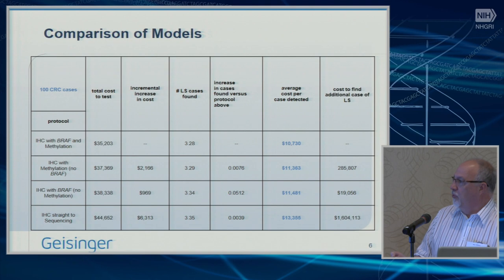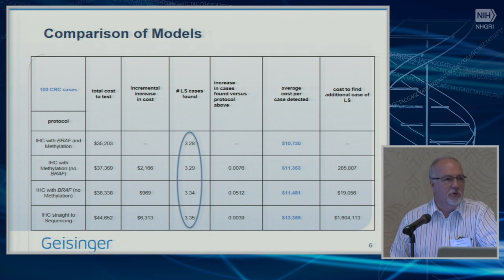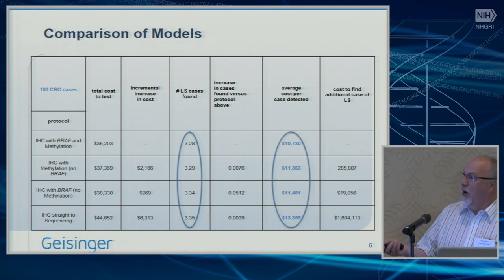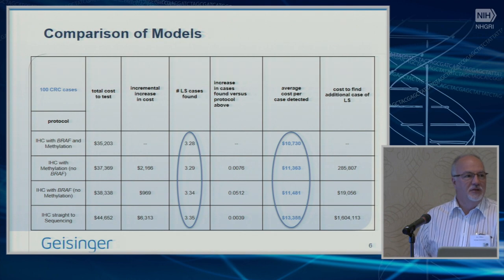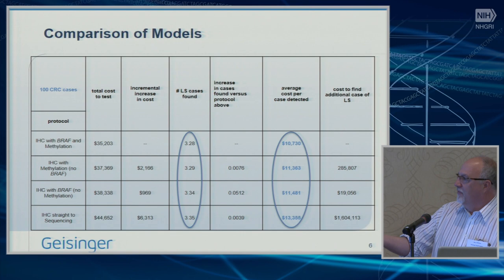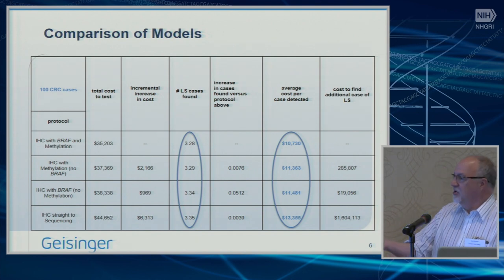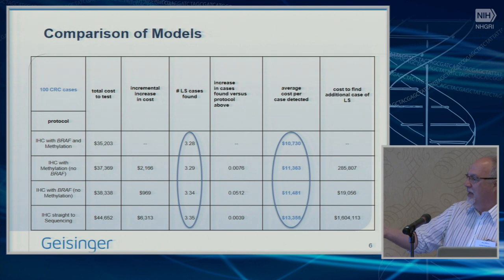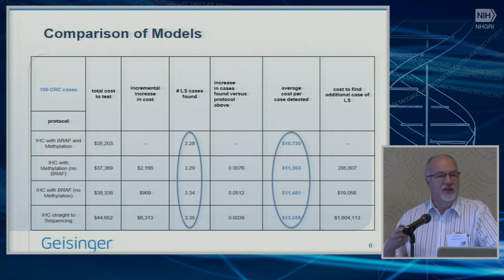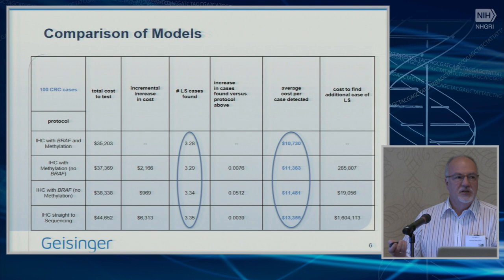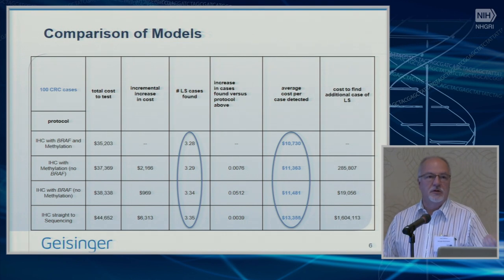What we found was that using these different approaches essentially had no impact at all on the number of Lynch syndrome cases identified. But if you look at the cost of the different approaches, there's a significant difference in cost per case of Lynch syndrome detected — from $10,700 with one approach to over $13,000 with another. From a system perspective that has to spend money on this, that's a really important piece of information: $3,000 less per case detected with no loss of sensitivity.